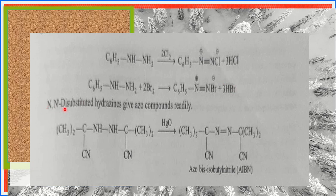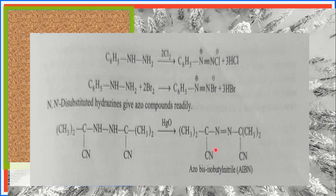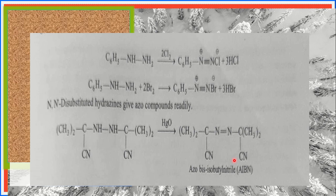Now, if we consider N,N-disubstituted hydrazines — those were the monosubstituted hydrazines. If we take disubstituted hydrazines, where two groups are attached, N,N-disubstituted hydrazines give azo compounds readily. Here also a diazonium salt is obtained, but this process is slow in comparison. With monosubstituted hydrazines the azo compound forms quickly and the reaction is fast. The reaction is shown here: N,N-disubstituted hydrazine reacts with HgO as catalyst to give azo-bis-isobutyronitrile (AIBN), which is the azo compound, and it is a rapid reaction. Today we have studied the oxidation of hydrazines.